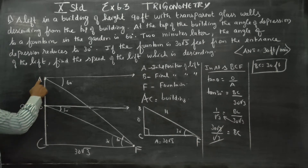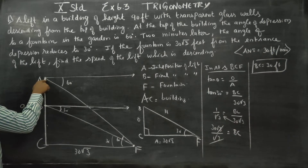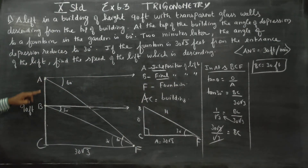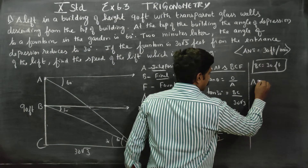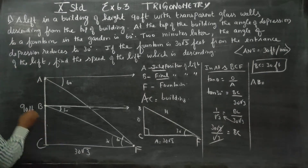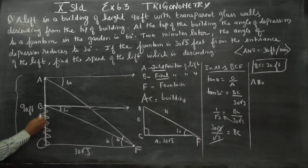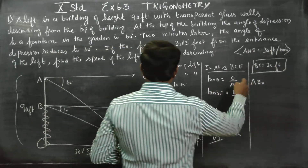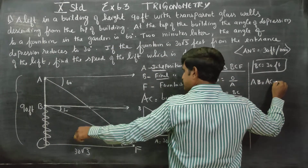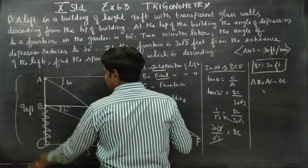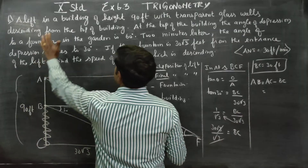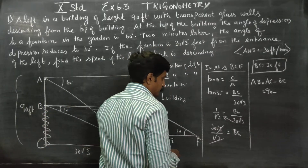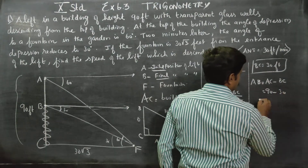The lift traveled a distance. AB is the distance traveled. The lift moved from the top position A to position B. AB equals AC minus BC. AC is the height of the building — 90 feet. BC equals 30 feet. So 90 minus 30 equals 60 feet. AB equals 60 feet.